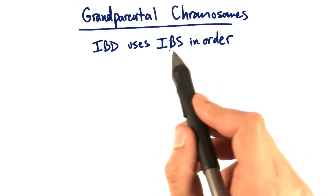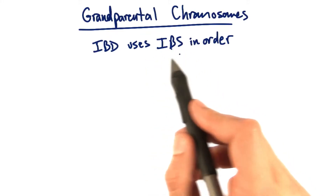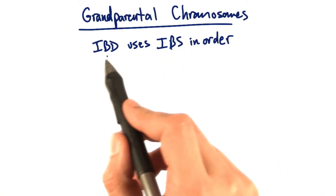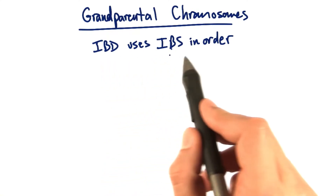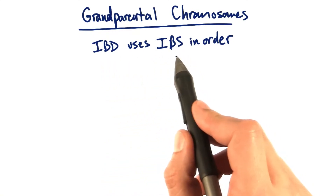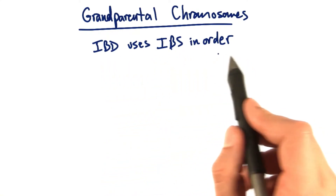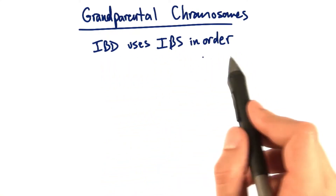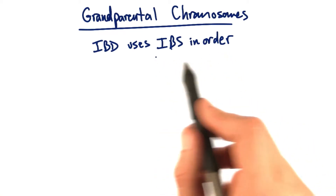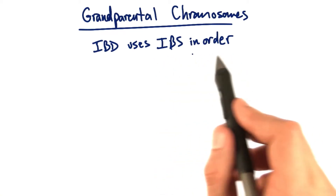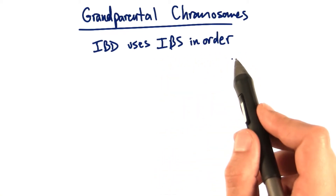Instead of just calculating an IBS score percentage, IBD focuses on using IBS in a particular order on your chromosomes. It helps you determine which piece of the chromosome came from who in your family.